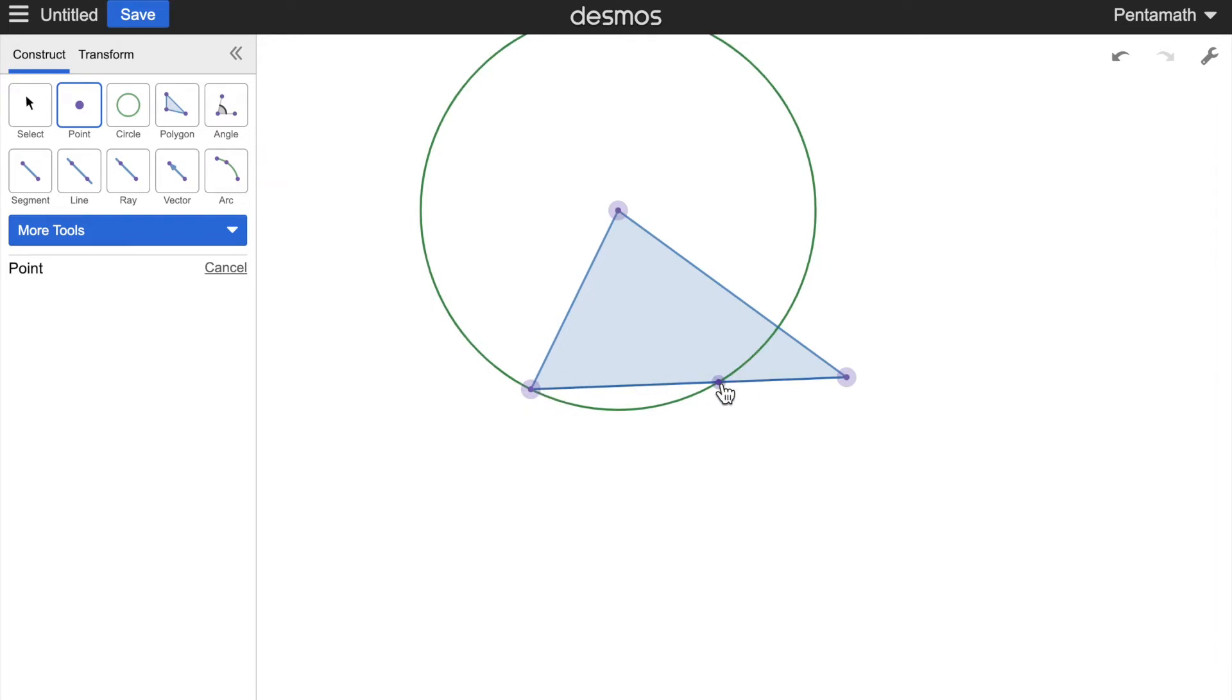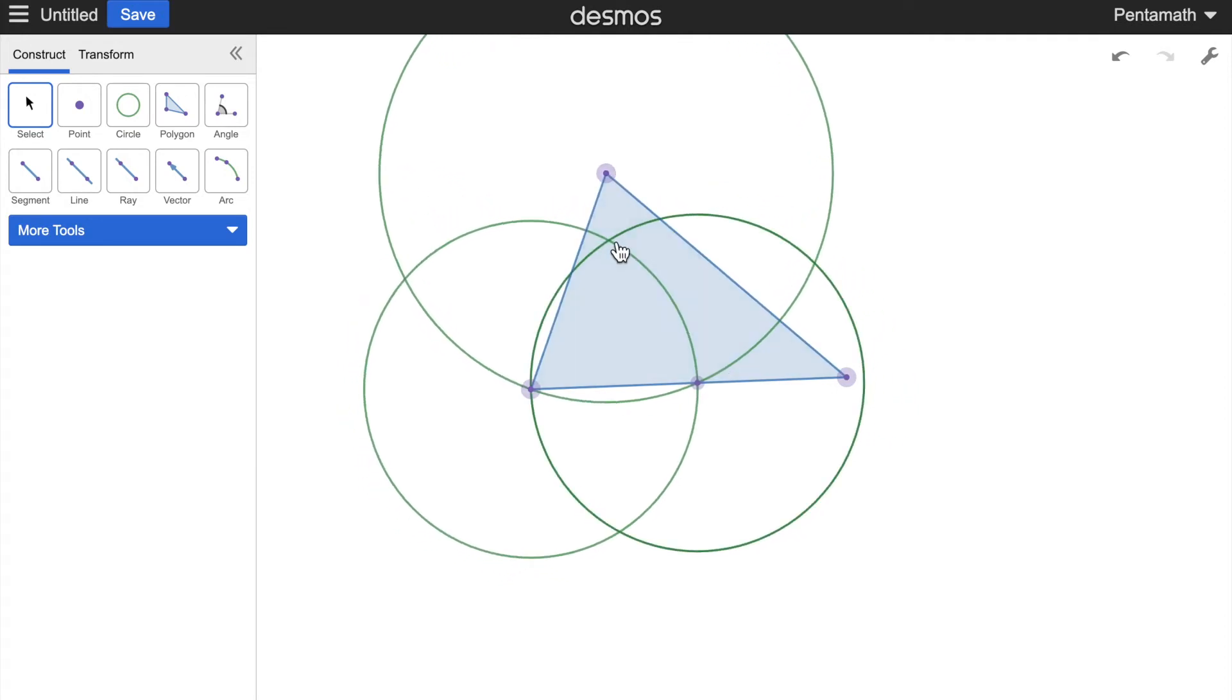Now what you want to do is just do a perpendicular bisector of this segment here, because that will be perpendicular to the segment and also pass through this point here. How you do that is you get a circle from this being the center to this point, and also the other direction.